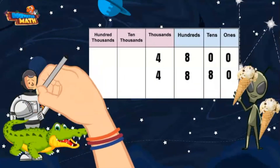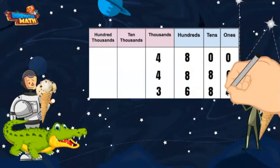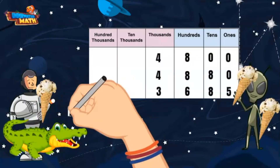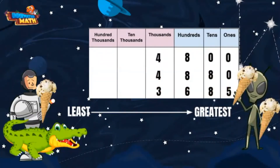Lenny also gave me an ice cream that had 3,685 sprinkles on it. Help me put these three numbers in order from least to greatest. Remember, least means smallest and greatest means largest.